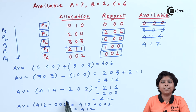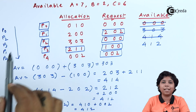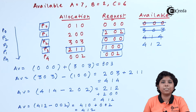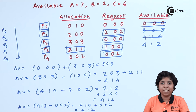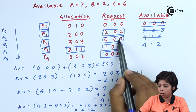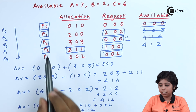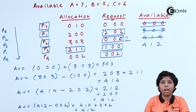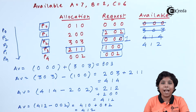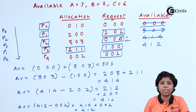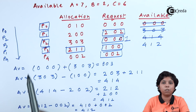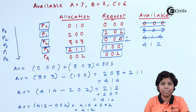This gives us the final available state and a safe sequence. Now if process P2 requests one more instance of resource type C, the request matrix becomes 0,0,1. P2 cannot be allocated after P0 because the available matrix was still 0,0,0 at that point, and a deadlock state occurs. The system enters deadlock with processes P1, P2, P3, and P4 involved, while P0 is considered safe.